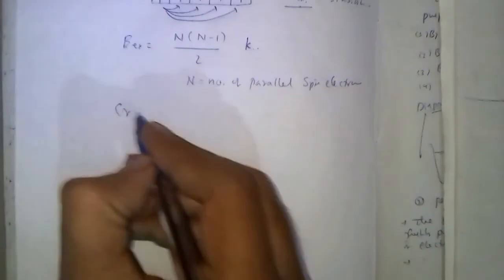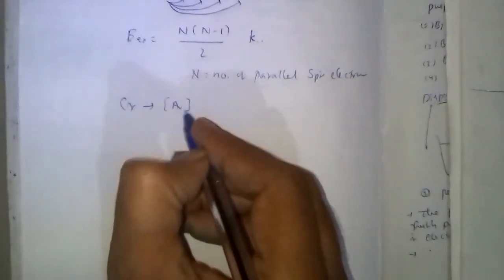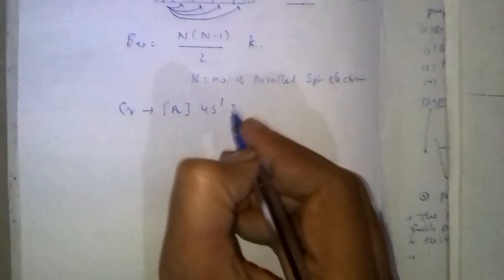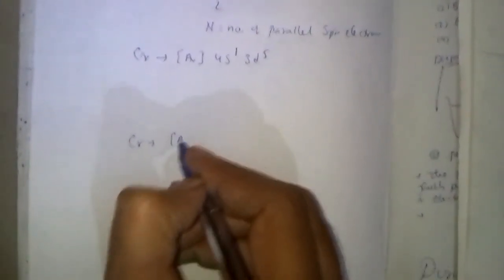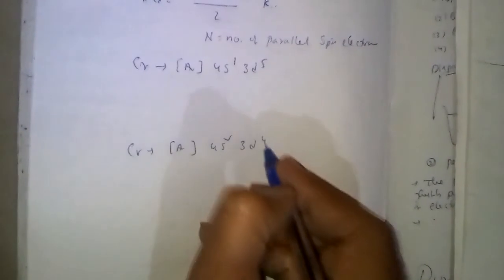Because of higher exchange energy, chromium has electronic configuration argon 4s1 3d5, but not argon 4s2 3d4.